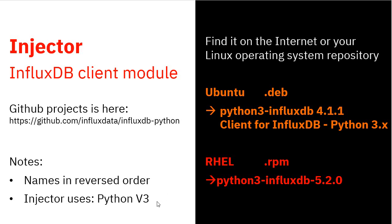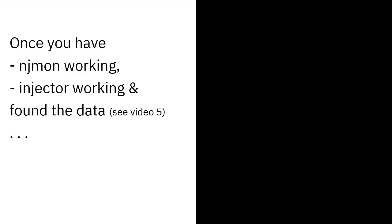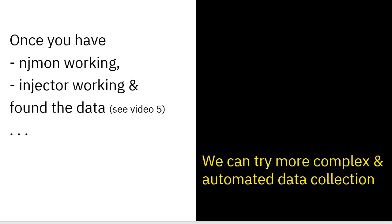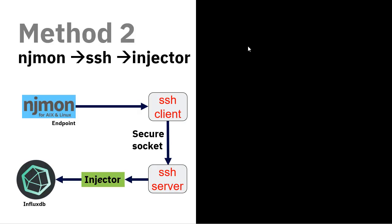So once we have NJMon collecting data, the data looks good, we use the injector and it doesn't throw any errors, and we found the data, you can see in video 5 — if you're using Grafana — how to get a first graph up with some data in it, just to prove that it's there. Then we can go on to more complex ways of setting this up: automated data collection. So here's method 2 for automation — we're going to use SSH to do the bridging between the endpoint and the InfluxDB database, passing the data through the injector.